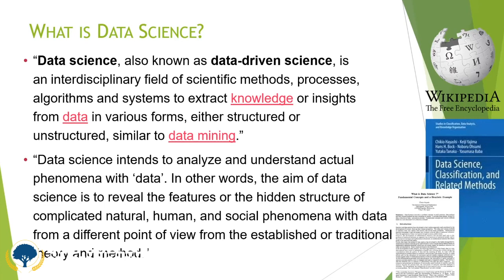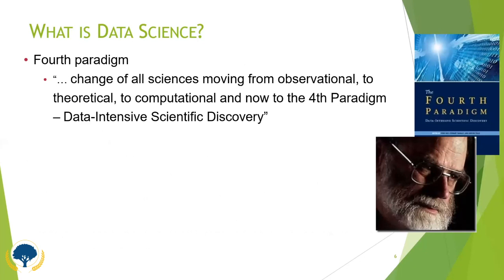The main aim of data science is to reveal hidden features or structures in complicated social or natural phenomena, using data from different points of view. For example, imagine we have plenty of data with respect to our college — previous admissions and the strength of BCA or MCA programs. We analyze that available data to predict how many students will come for admission this year. This is the kind of predictive analysis related to data science.